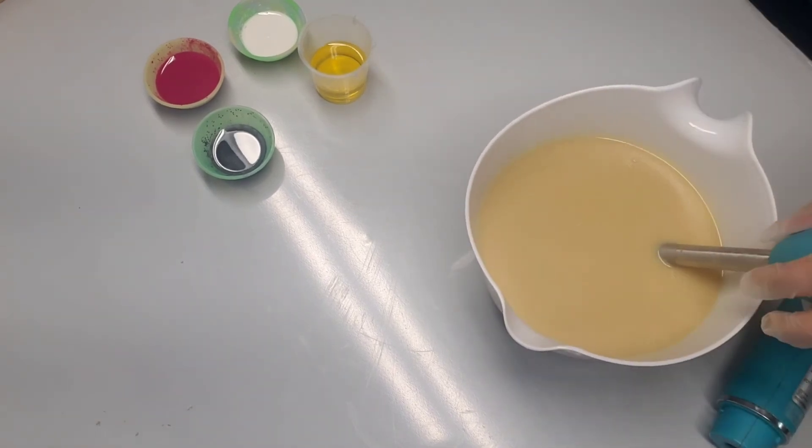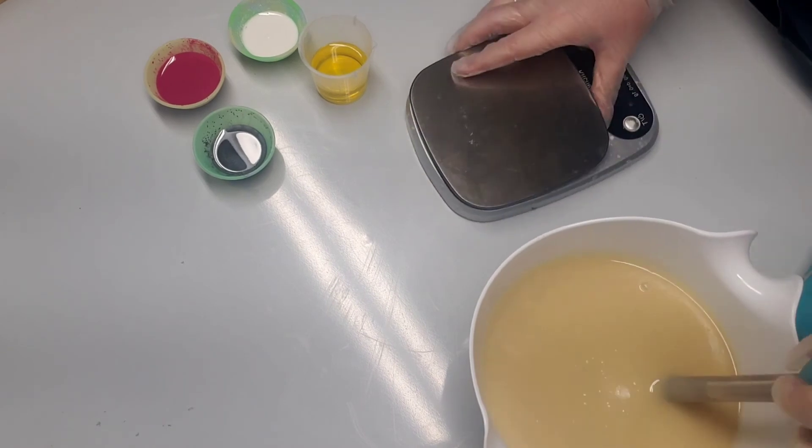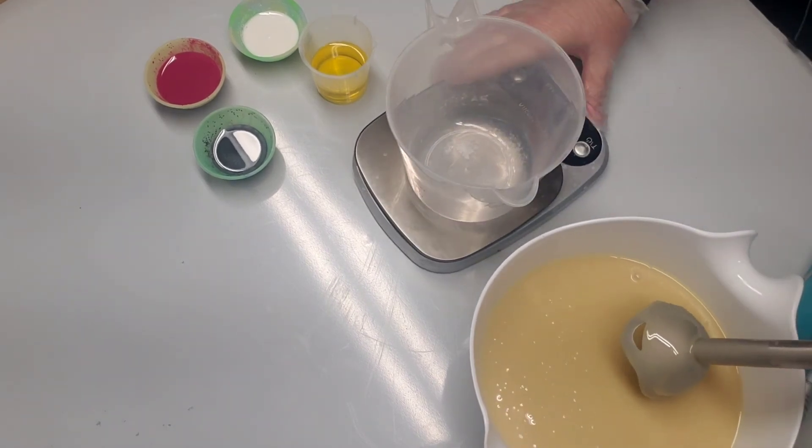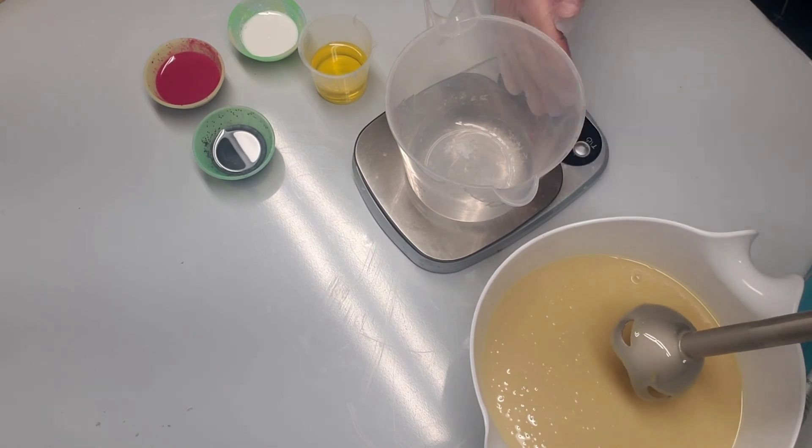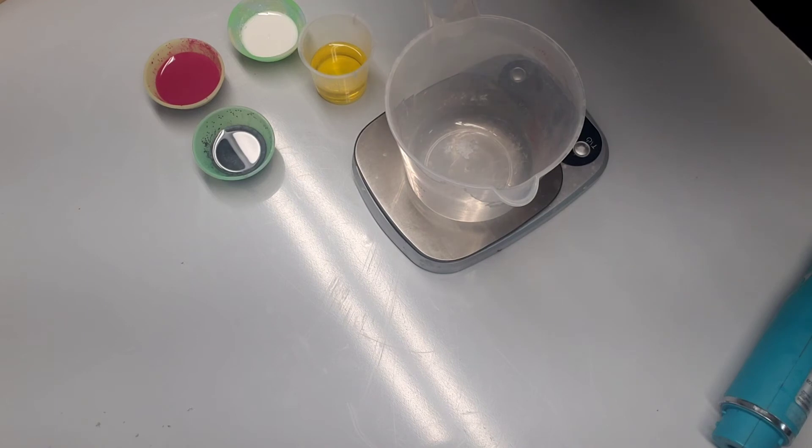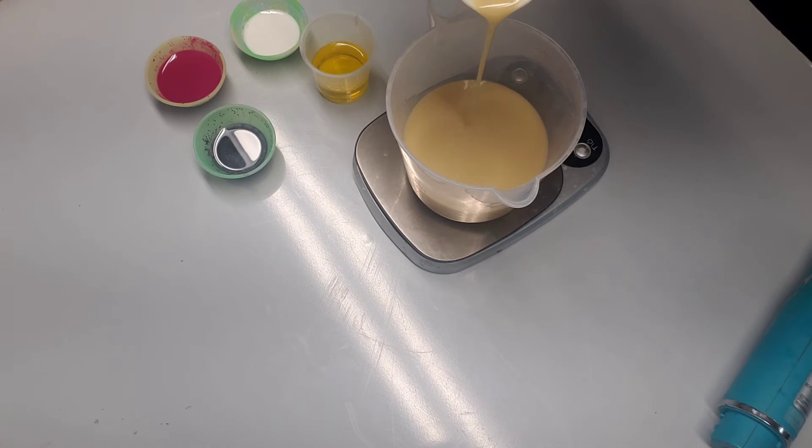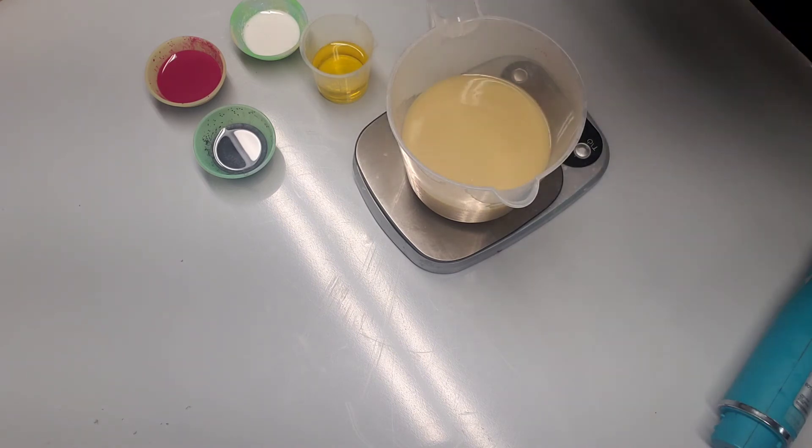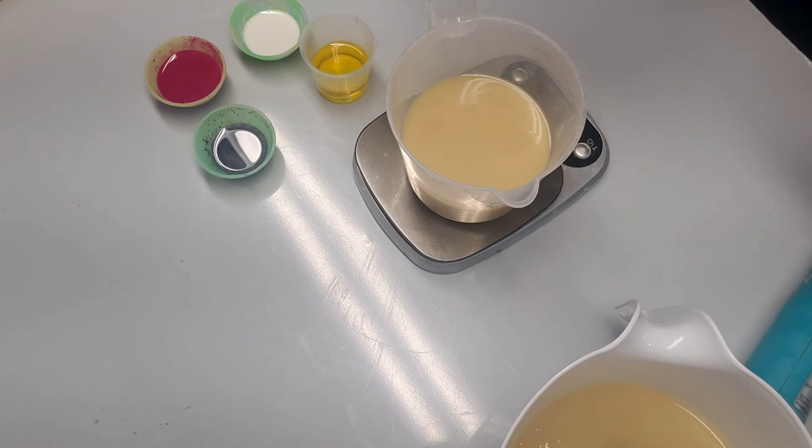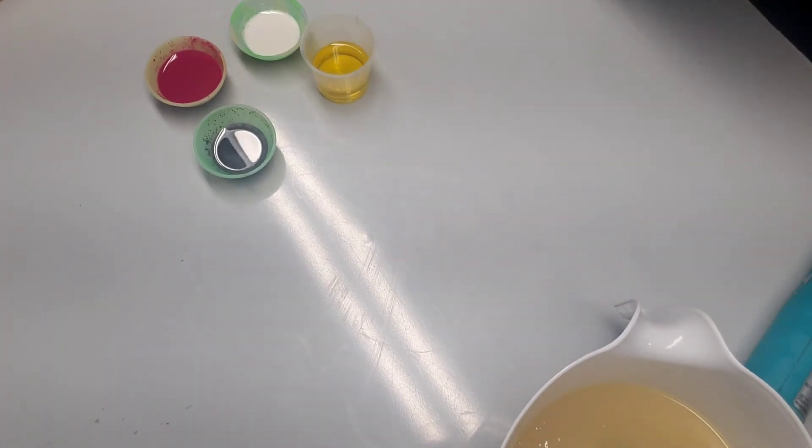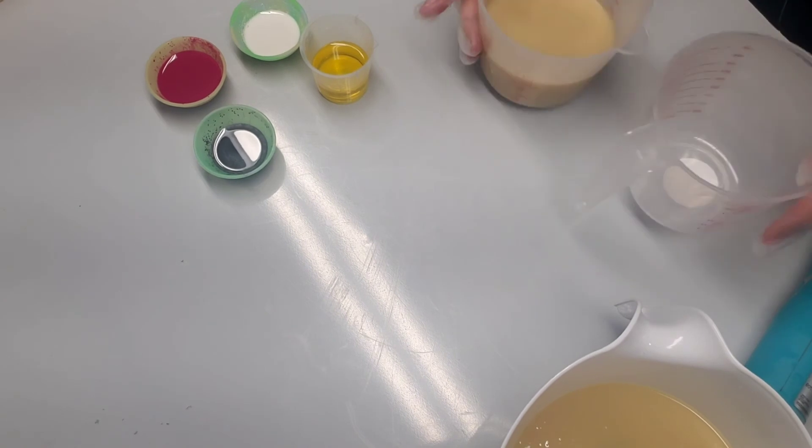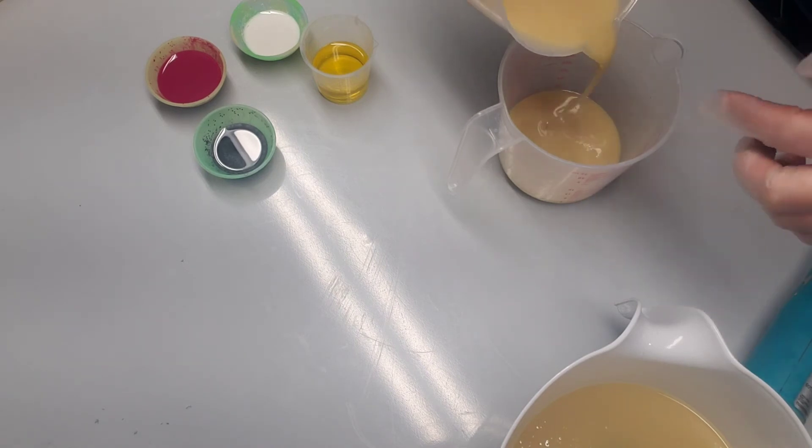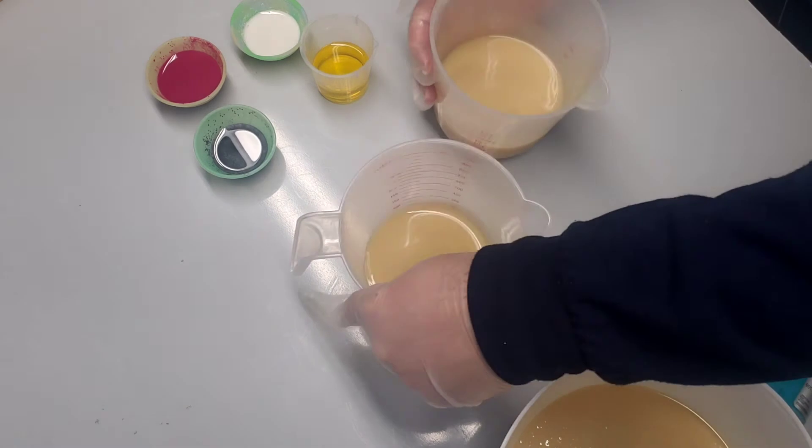Now I'll measure the portions I'll be using. I'll be doing three layers. In the first layer I'll be using white and pink color, and I'll be doing an in-the-pot swirl. I'll divide this into two - mostly white.